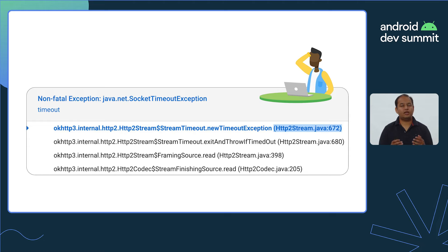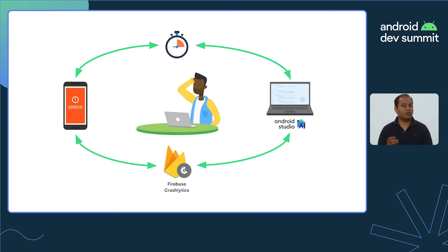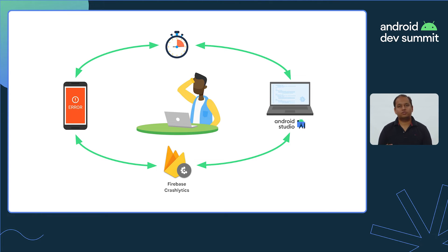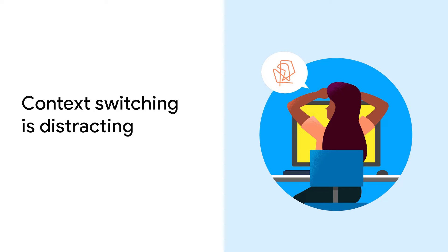Then you have to read and understand where the crash originated in your code base, memorizing the exact method or the line number. And then quickly switching back in Android Studio, opening the file to find that specific line before you forget it. If you forget the line number or need more information, you're back in the Firebase console and have to repeat the process all over again. Context switching is distracting, especially when you're working on those important issues or chasing tight deadlines.